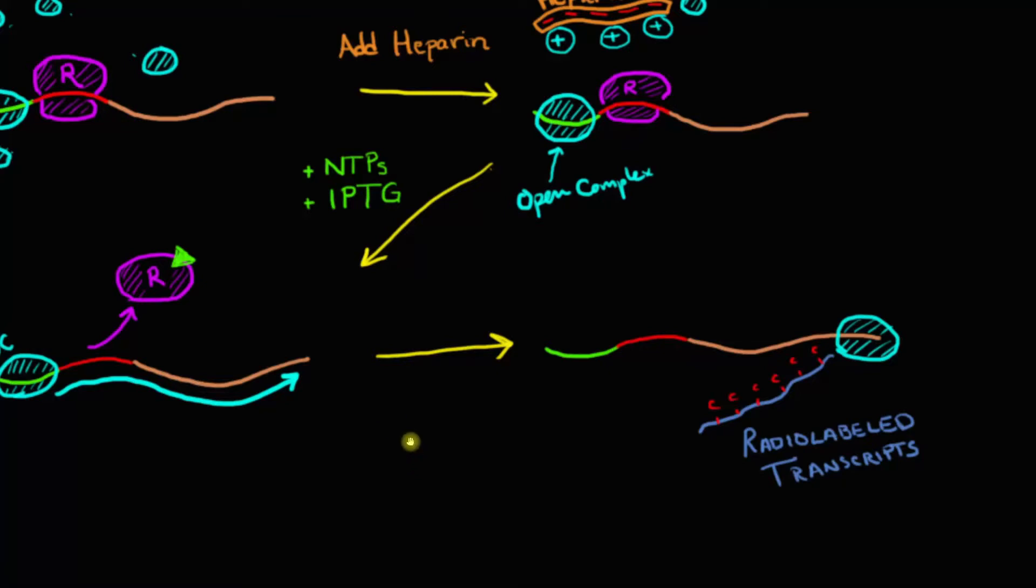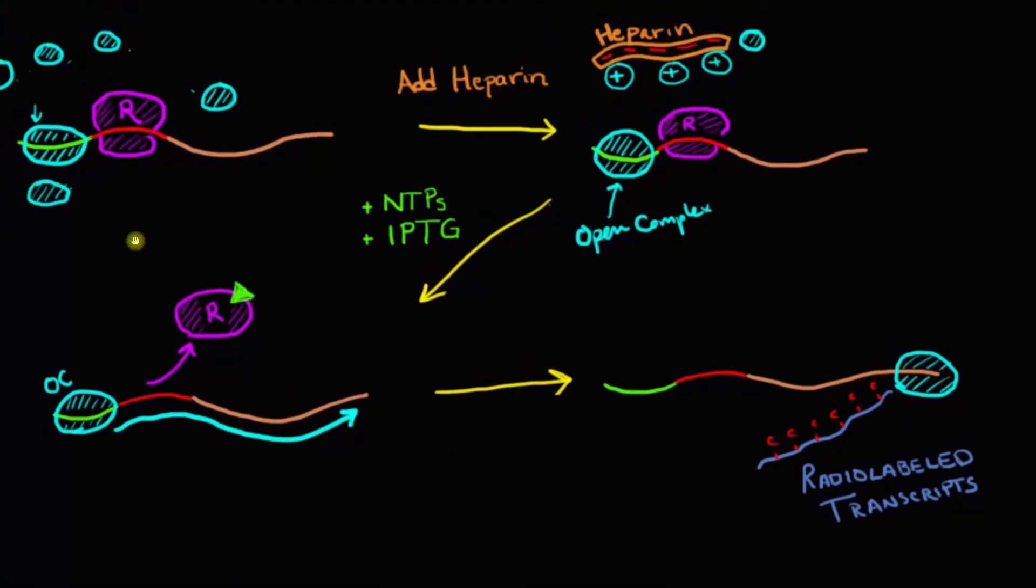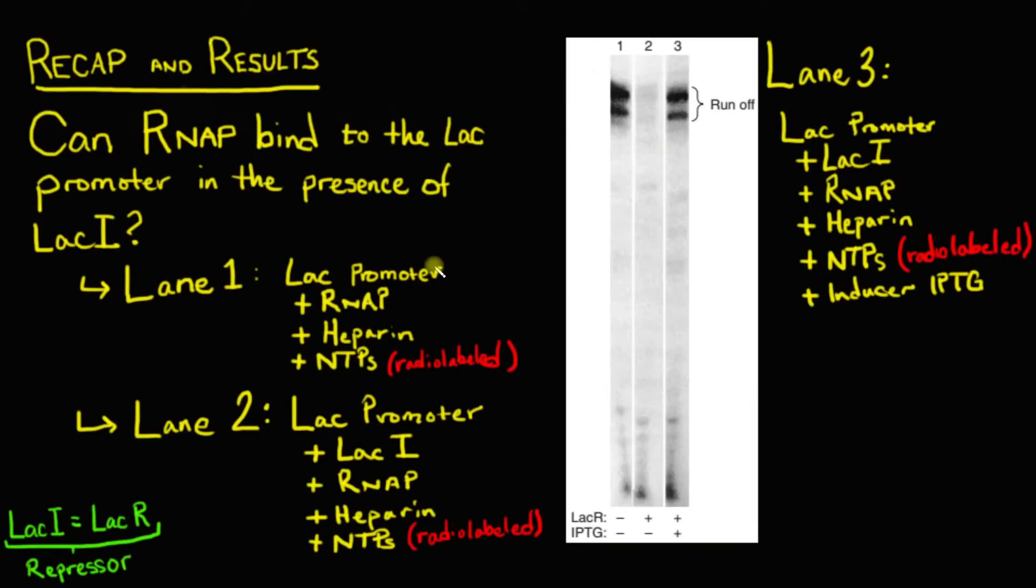So what did the authors actually find? So to recap, the authors wanted to figure out whether or not RNA polymerase was in fact able to bind to the lac promoter, even in the presence of repressor. As a quick aside, you'll see that in the figure it mentions lac R here. Lac R is the name for the repressor protein that's coded for by the lac I gene. So when you see lac I and lac R, we can interpret them both as repressor.